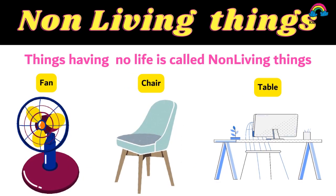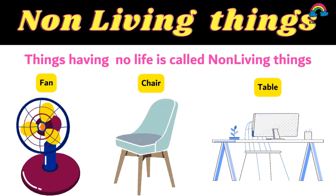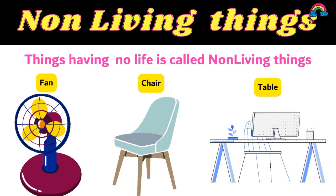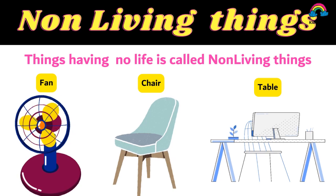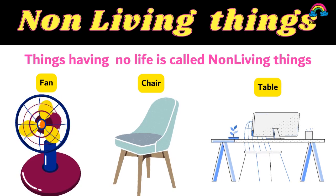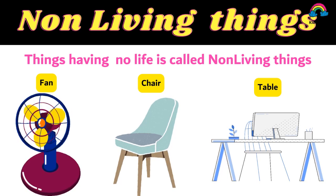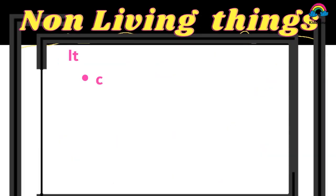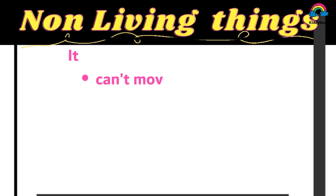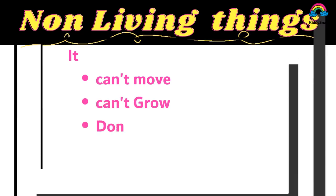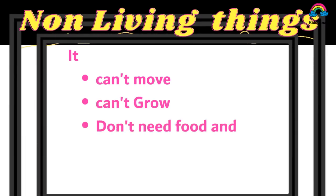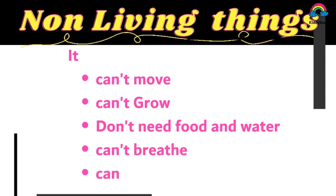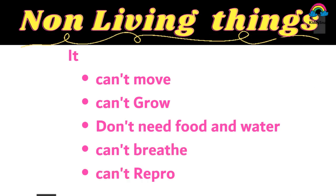Now considering non-living things: things having no life are called non-living things, like a fan, chair, and table. Non-living things can't move, can't grow, don't need food and water, can't breathe, and can't reproduce.